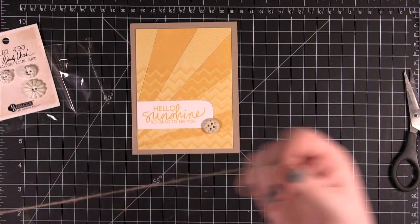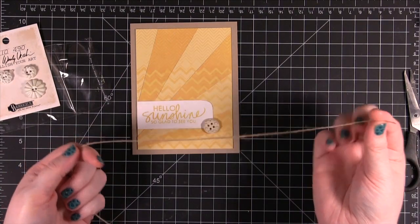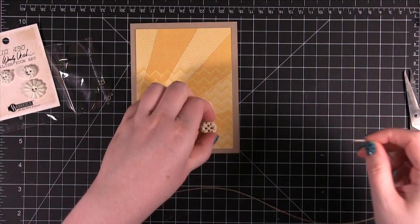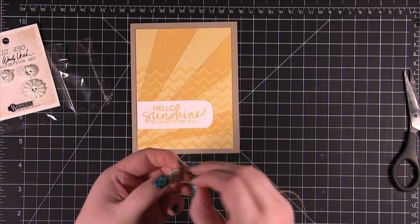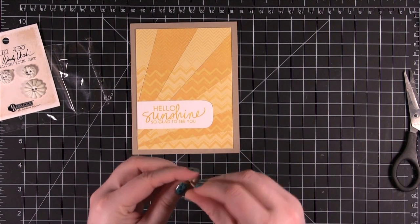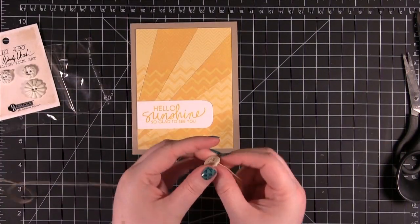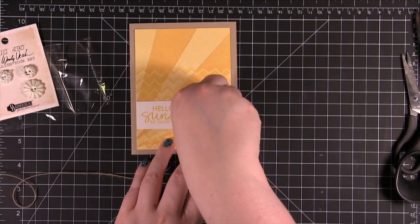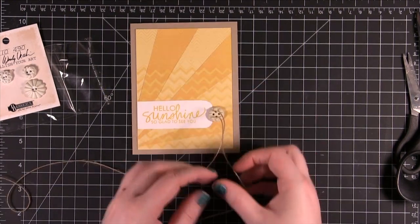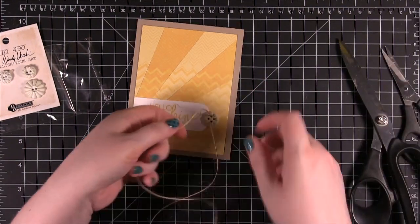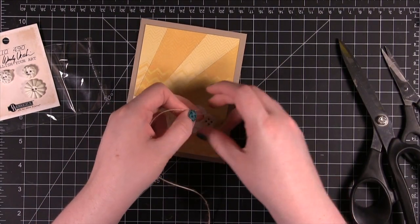I'm taking some May Arts. This is the natural color twine. And I'm going to put it through the button. All right, put a little glue dot on the back. And I'm just going to put that right there just to hold it in place. And then I'm going to tie the twine into a bow.